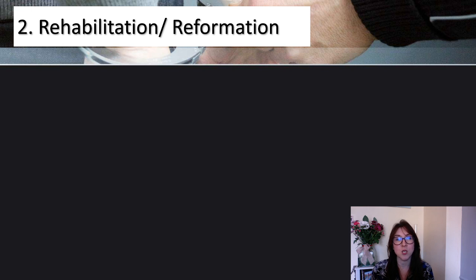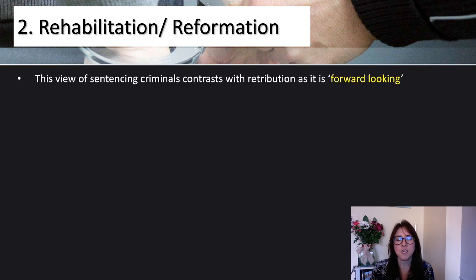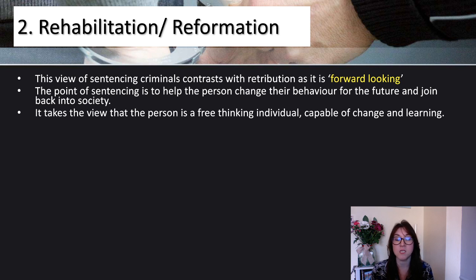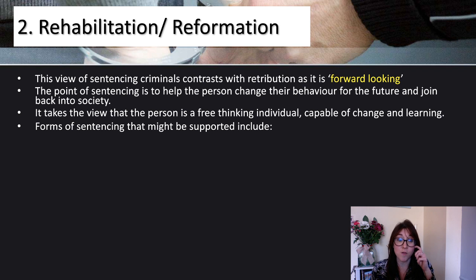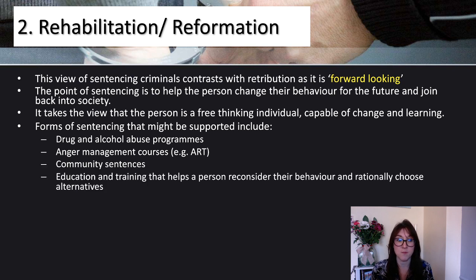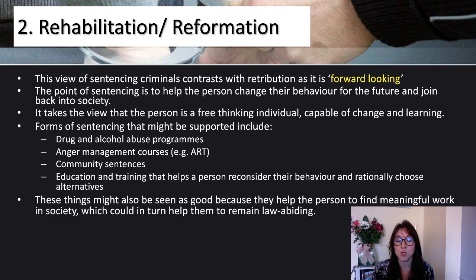Number two is rehabilitation, or reformation. This view of sentencing contrasts with retribution as it's forward-looking. The point is to help the person change their behaviour for the future and rejoin society. It takes the view that the person is a free-thinking individual, capable of change and learning. Forms of sentence that might be supported include alcohol and drug abuse programmes, anger management, community sentences, and education and training to help them rationally choose alternatives to crime. These things may also help the person find meaningful work, which could in turn help them remain law-abiding.